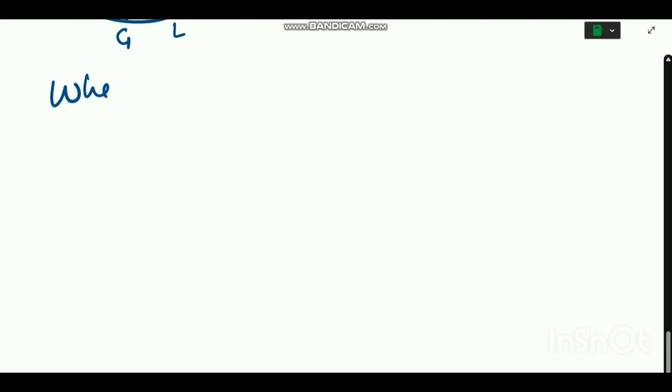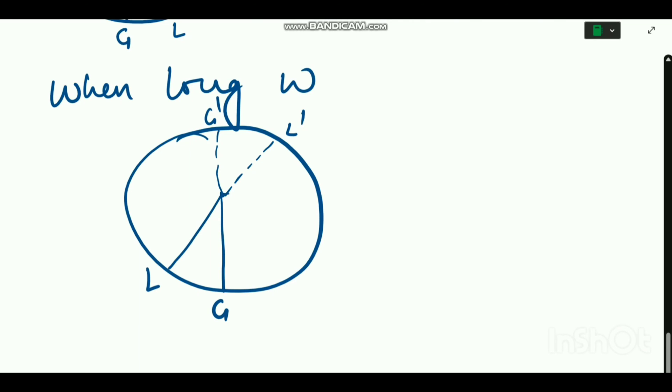In the case the longitude is west, LMT equals GMT minus LIT west, as you can see in this picture. So this much is important from the topic of concept of time. Hope you have liked it. Thank you.